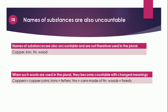Point 13: Names of substances are also uncountable and are not therefore used in the plural — for example, copper, iron, tin, wood are all uncountable. But when such words are used in the plural, they become countable with changed meanings: 'coppers' means copper coins, 'irons' means fetters, 'tins' means cans made of tin, and 'woods' means forest.